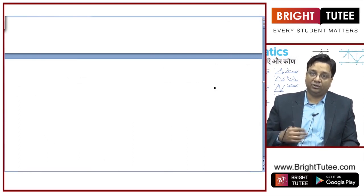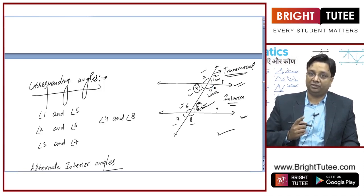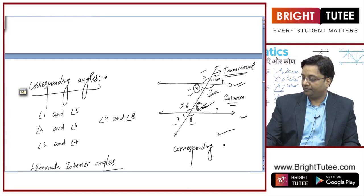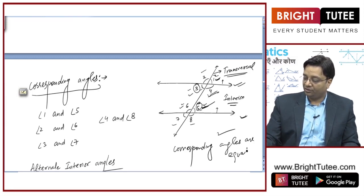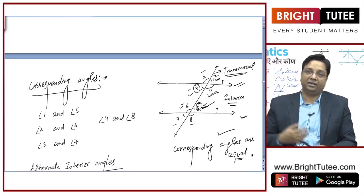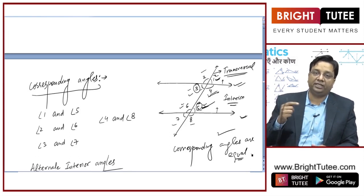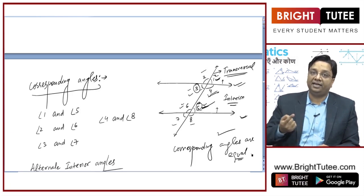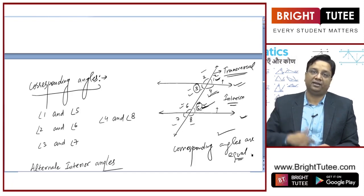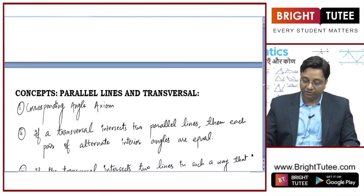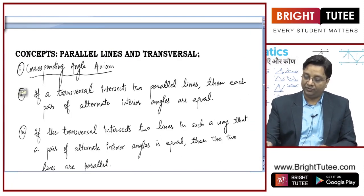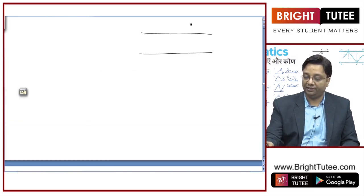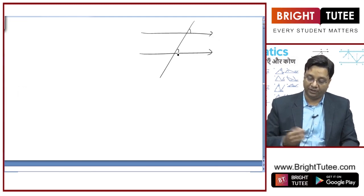Let us study about some axioms and theorems which will be used in this chapter. The first and most important axiom is that corresponding angles are equal. This is known as the corresponding angles axiom. When there is a pair of parallel lines cut by a transversal, the corresponding angles are equal.